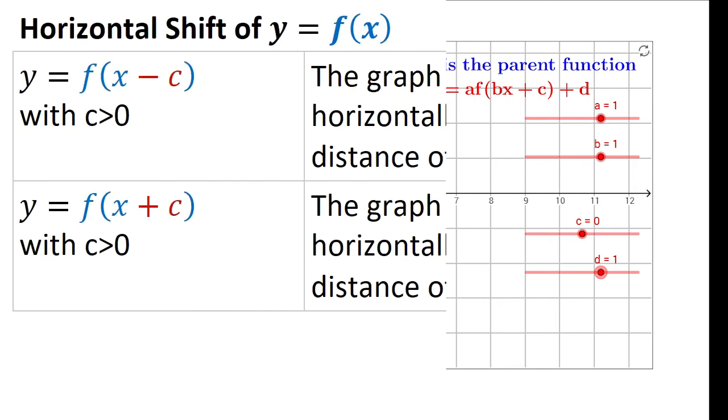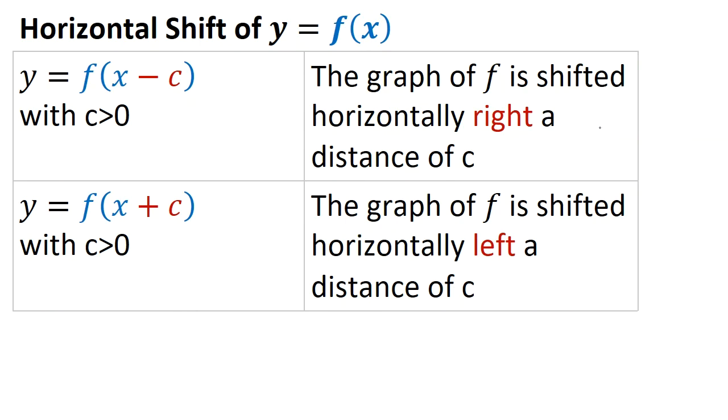We've talked about a vertical shift up or down, and now we're going to talk about a horizontal shift. So I want to point out to you the difference here. Notice here we have f of x minus c. We're talking about inside the argument of the function. Inside the argument impacts the x coordinate. So this is the x coordinate only.